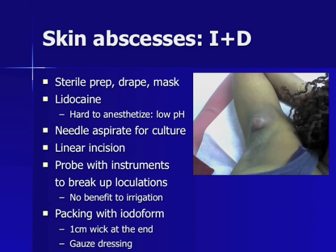When performing incision and drainage for a skin abscess: always perform sterile prep, wear a mask and gown with eye protection. Initial needle aspiration may be performed for culture. Make a linear incision throughout the length of the abscess, then probe the cavity with instruments to break up loculations — there is no benefit to irrigation in this step. Never probe with your finger as there may be sharp foreign bodies within the cavity. After drainage, pack with iodoform gauze, leaving a 1-2 cm wick for easy removal at recheck, then apply an external gauze dressing.